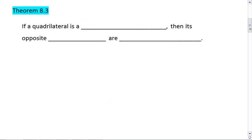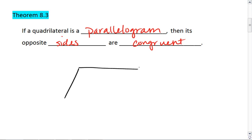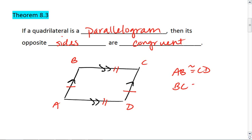This is going to lead to a number of theorems. The first of which is that if a quadrilateral is a parallelogram, then its opposite sides are congruent. So say we have our parallelogram. We have one pair of parallel sides and another pair of parallel sides. Then the opposite sides are also congruent. So AB is congruent to CD and BC is congruent to AD.